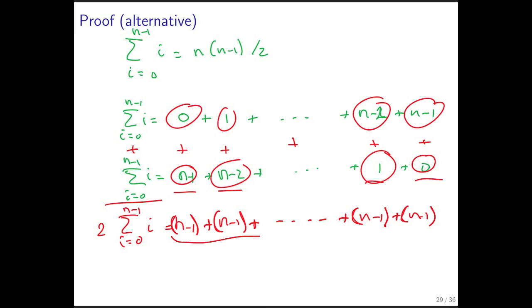Now, how many of these terms are there? n. So if I add them all together, I get n times n minus 1, which then is equal to 2 times the result of what I want.